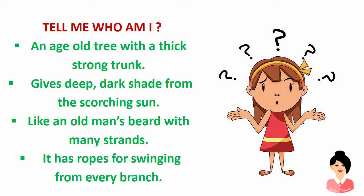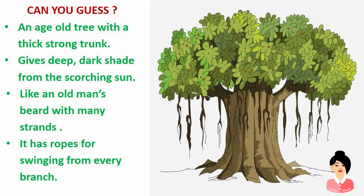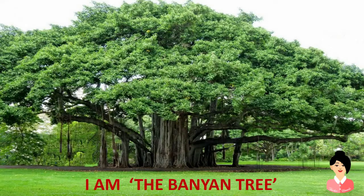I have a riddle for you. Tell me who am I? An age-old tree with a thick strong trunk gives deep dark shade from the scorching sun. Like an old man's beard with many strands, it has ropes for swinging from every branch. Looking at this image, it is clear that this tree is none other than the banyan tree.